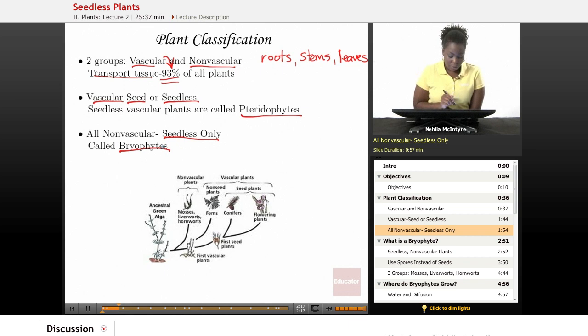So just as a quick review, all plants have a common ancestor, and that ancestor is green algae. Green algae lived in the sea, or lived in areas with water, and from that green algae,